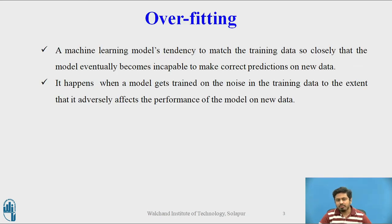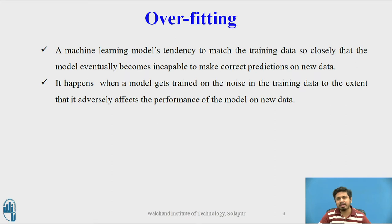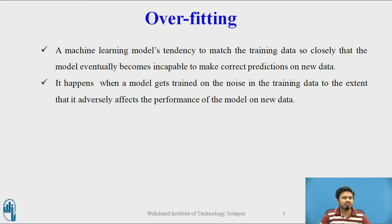So what exactly is overfitting? In general machine learning terminology, overfitting is a machine learning model's tendency to match the training data so closely that the model eventually becomes incapable of making correct predictions on new data. It is so tightly fitted with the training data that it almost matches the noise patterns in the data as well. This affects the model's capability to predict for extrapolated data values, and the model's performance on new data most often becomes miserable — and in general terms we call this overfitting.